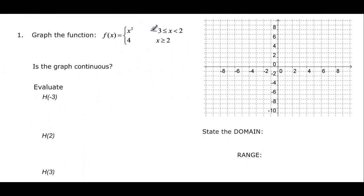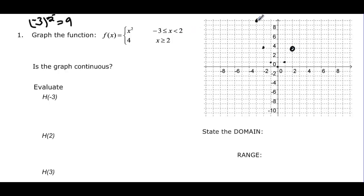Let's graph another function, going between negative 3 and 2. We graph x squared: at x equals negative 3, we get 9; at x equals negative 2, we get 4; at x equals 0, we get 0; at x equals 1, we get 1; and at x equals 2, we get 4, but that's an open circle because 2 is not included. It's a quadratic — you can tell from the x squared. On quadratics, you need several points to see how it curves.